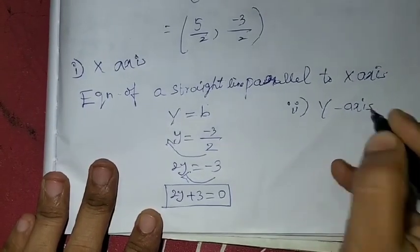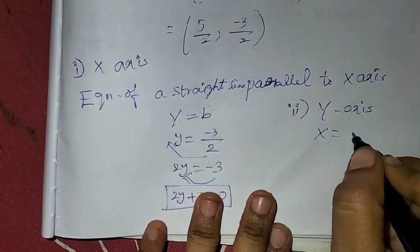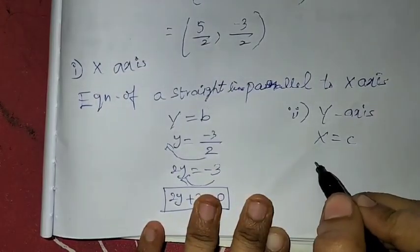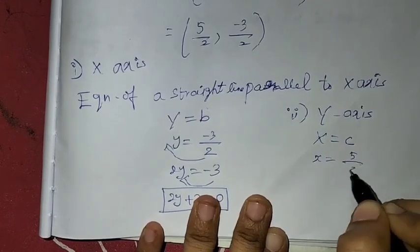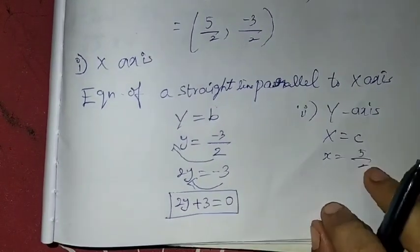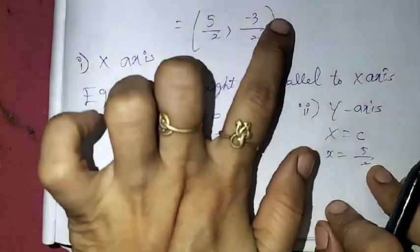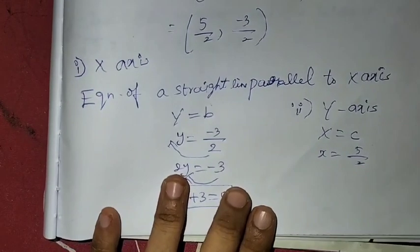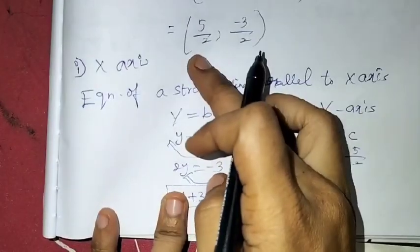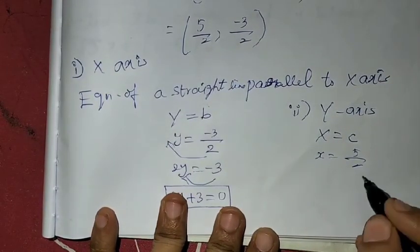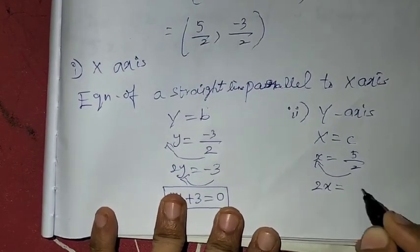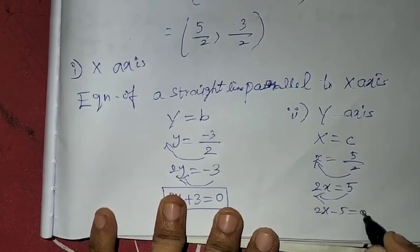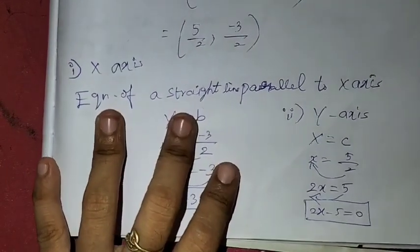Next, we are going to find the equation of a straight line parallel to y-axis. The formula is x = c, where c is nothing but the x value. So we substitute x = 5/2. The 2 goes to the other side, giving 2x = 5. Then 5 comes to the left-hand side and becomes -5. So, 2x - 5 = 0.